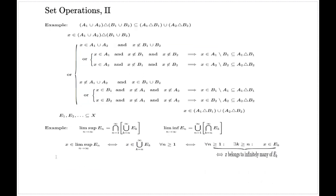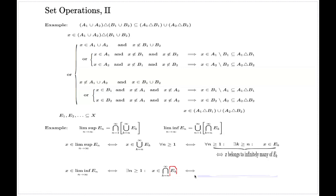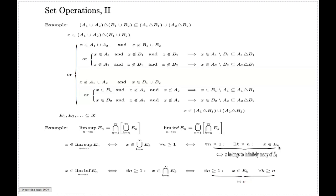Now lim-inf has a similar description. Here the union comes first, so there is just one n — one is enough — such that X belongs to the set in brackets. That set is an intersection, which means X belongs to every element in it. Continuing the analysis: there exists an n such that X belongs to E_k for every k larger than n. In plain language, X belongs to all E_k's after some point.